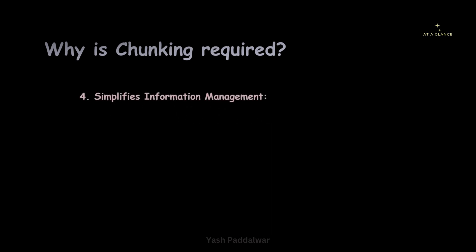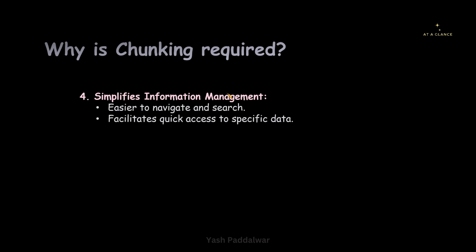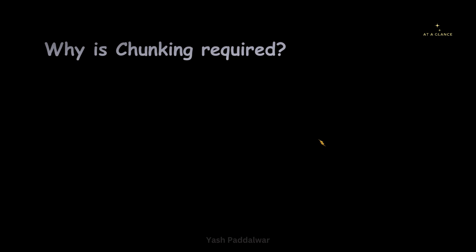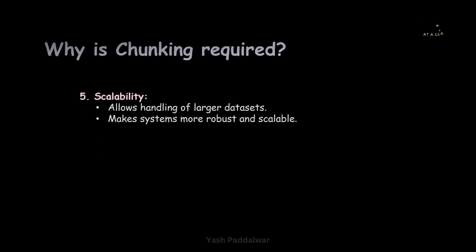The next reason chunking is required is that it simplifies information management. It is easier to navigate and search, retrieval becomes faster, and it facilitates quick access to specific data, allowing focus on a particular specific area in detail. The fifth reason is scalability — chunking allows handling of larger datasets. Even if the data grows larger and larger, you only need to increase the number of chunks; you don't have to scale your processing unit. It makes the system more robust and scalable.